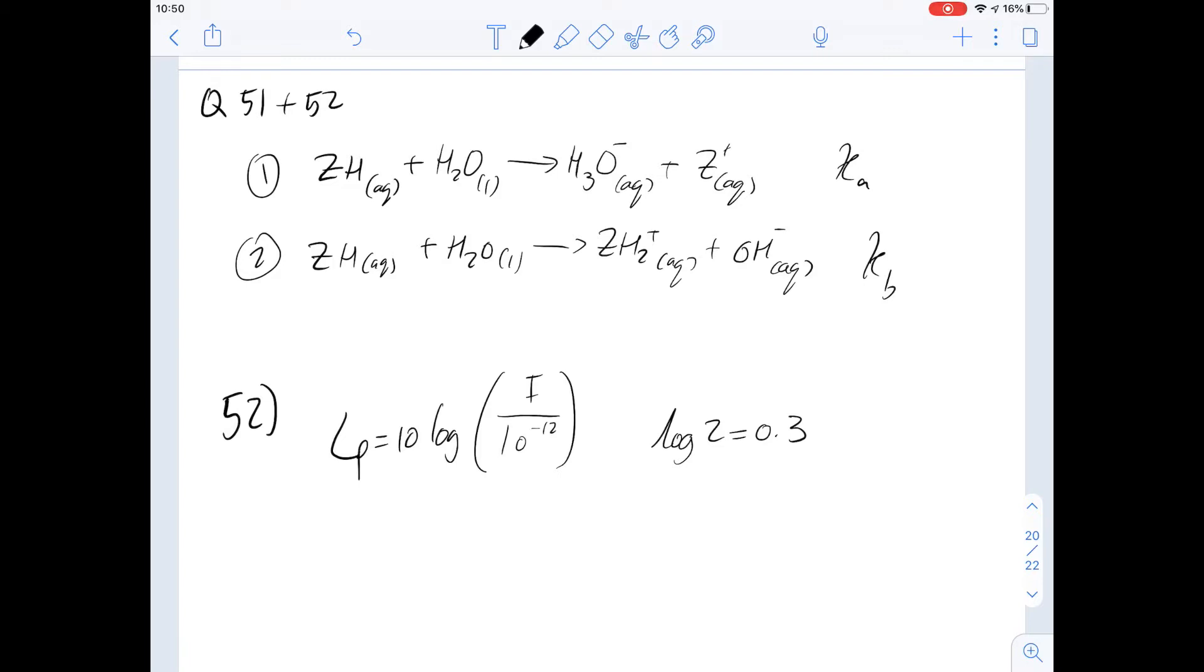The conjugate acid is produced whenever the base dissociates and the stronger the base, therefore the stronger the acidity of that acid relative to the strength of the base originally. That's why you'd get a large pKa value for a very strong base.